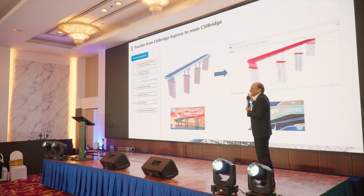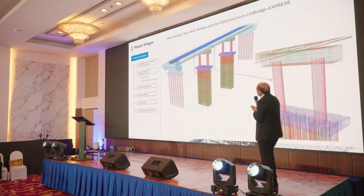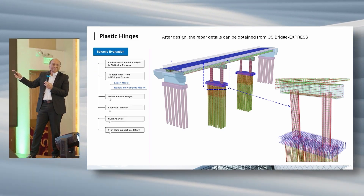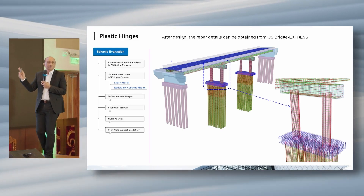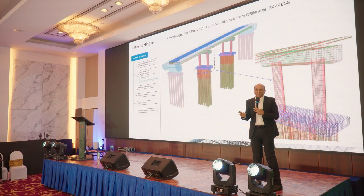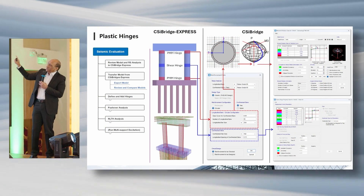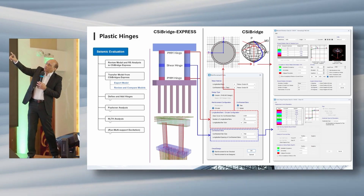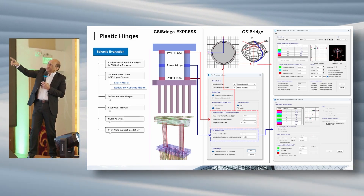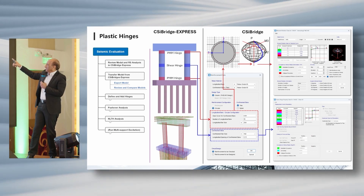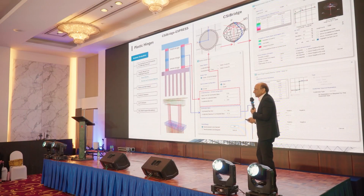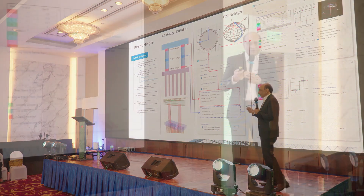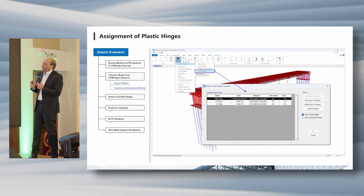The reinforcement in CSI Bridge Express is already defined and updated, so you use that reinforcement information to create hinges and non-linear data in CSI Bridge Main. Now in CSI Bridge Main there are many forms to fill — we don't have AI there yet — but you enter all the data, create the shear hinges, create the PM hinges, get the data from the column, and create the force-deflection curves. We are working to automate this.